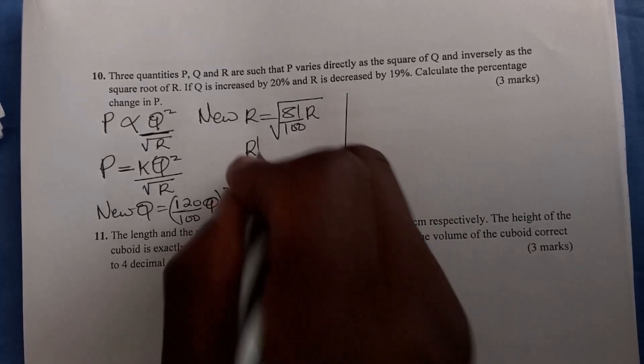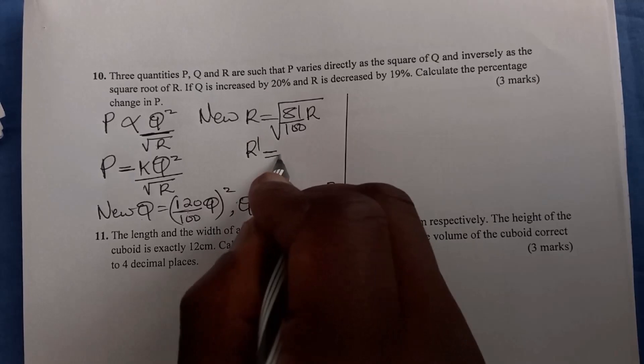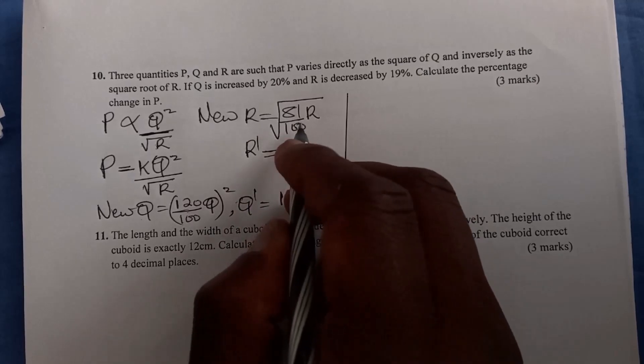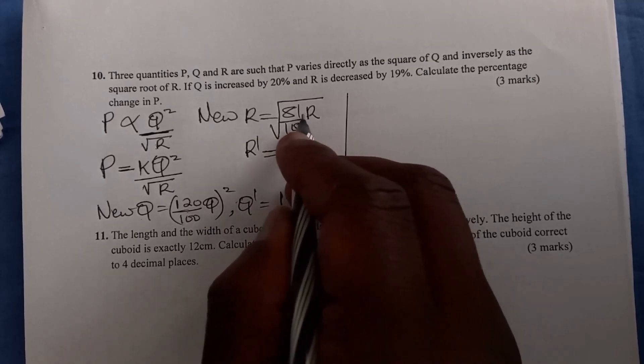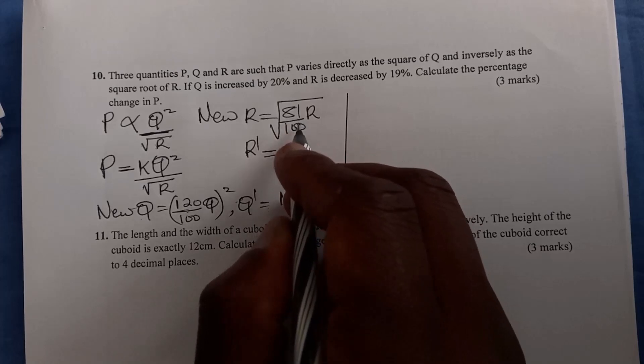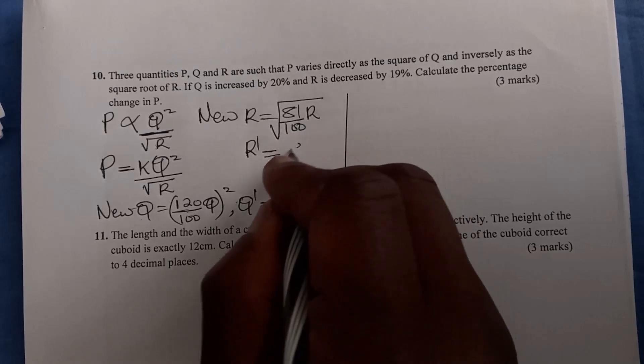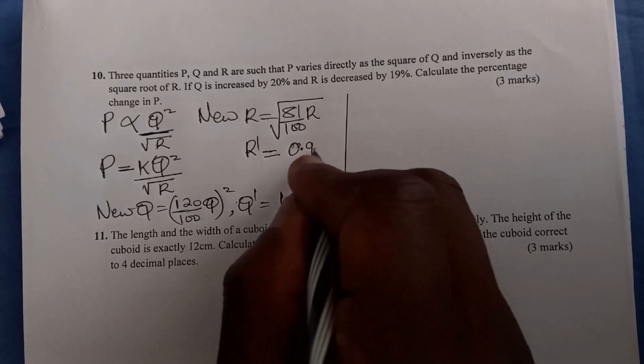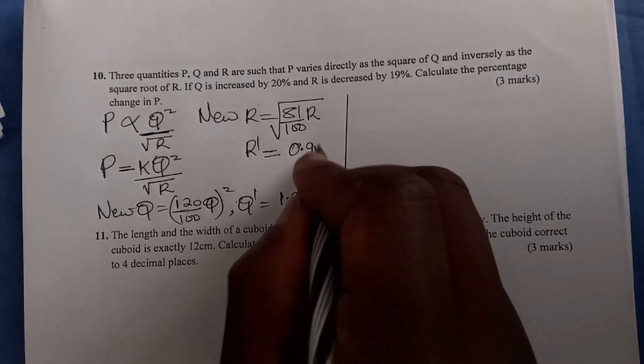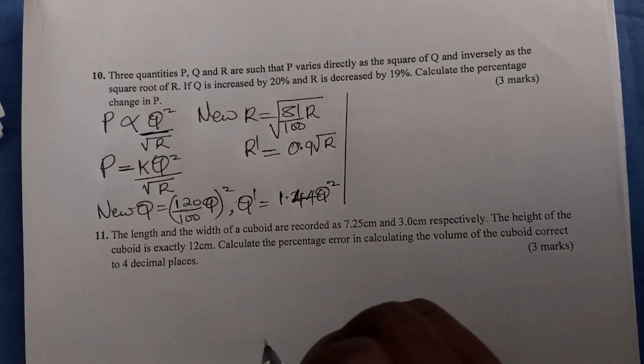For new R, I'll denote it by R prime. 81 over 100, when you get the square root of this, becomes 9 over 10, which is 0.9 times the square root of R.